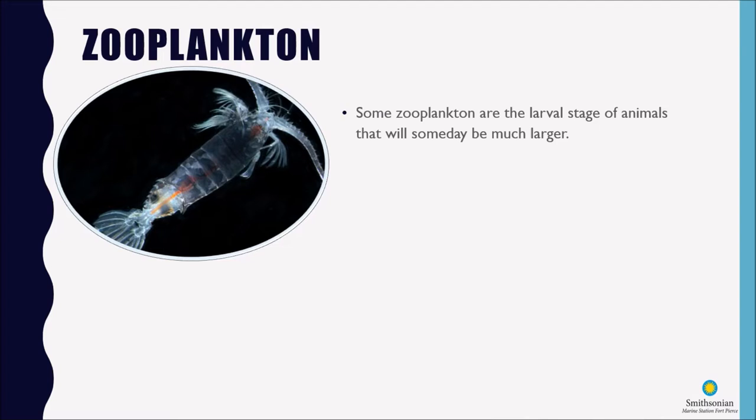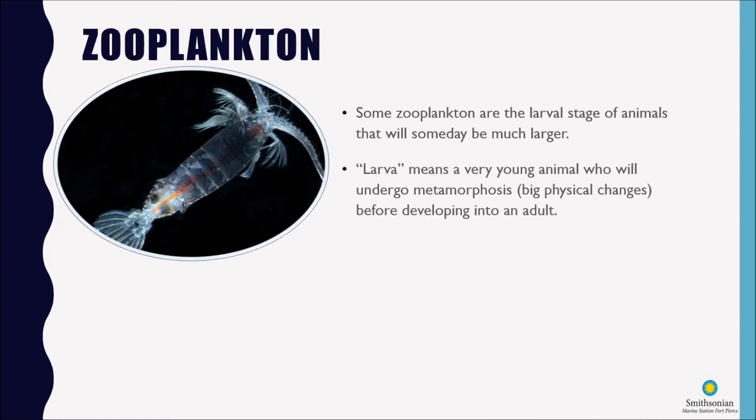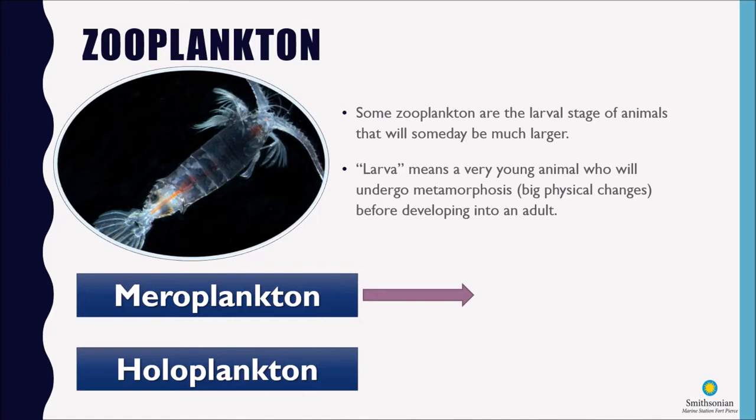So some of the animals that we're familiar with like crabs and sea stars and sea urchins, they all start as zooplankton. Now when I say larva I'm talking about a very young animal who will undergo metamorphosis, and that just means big physical changes before they develop into an adult. And there's two different types of zooplankton we're going to talk about today: meroplankton and holoplankton.